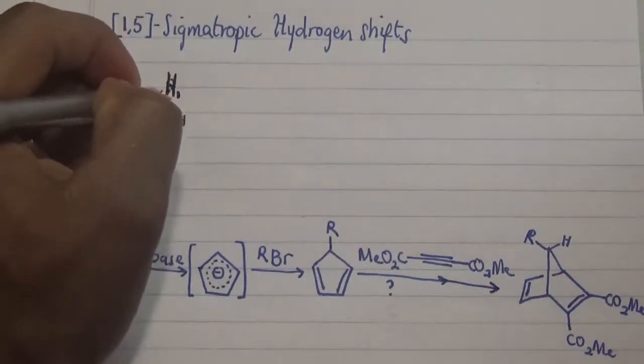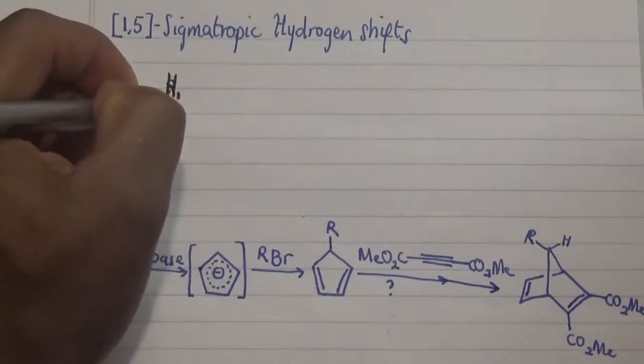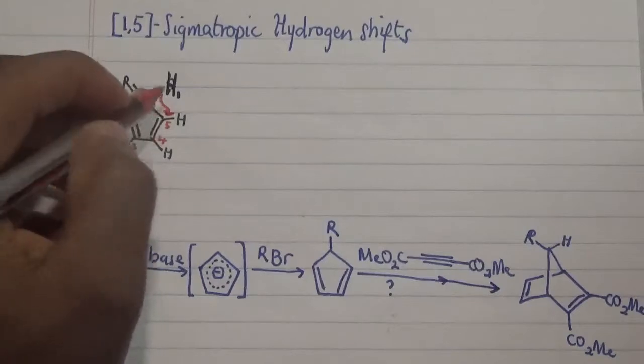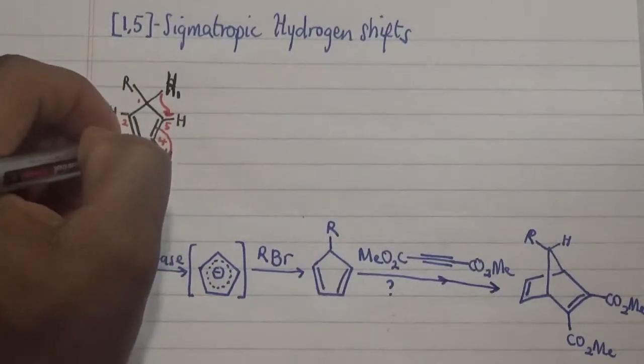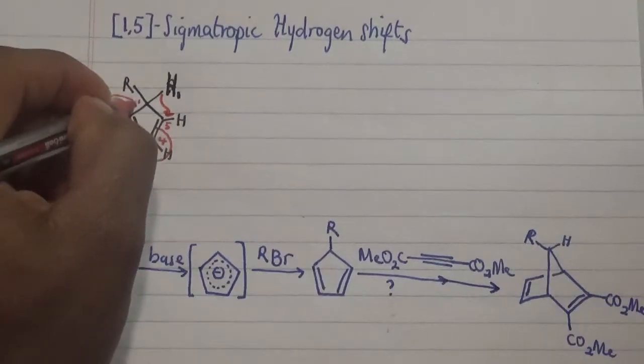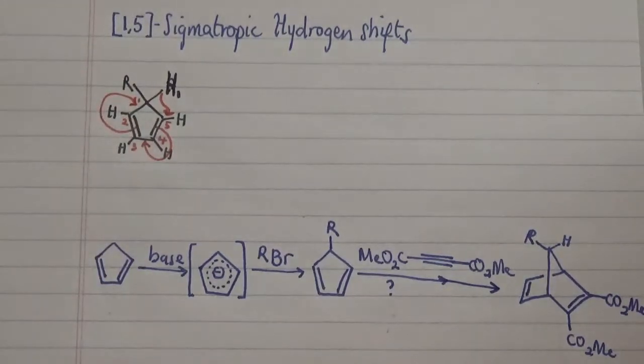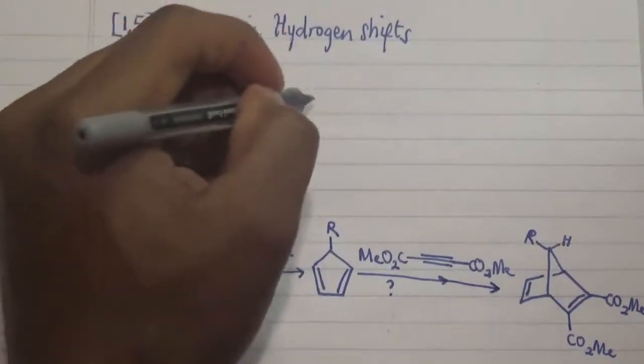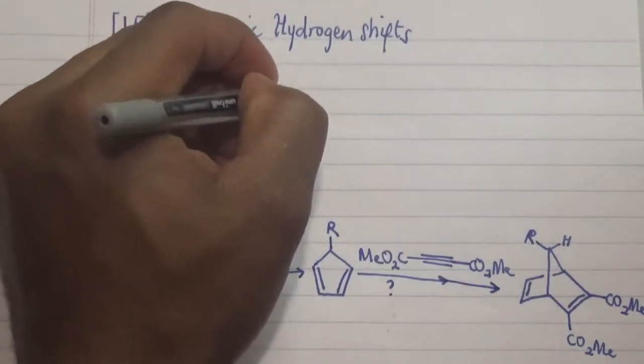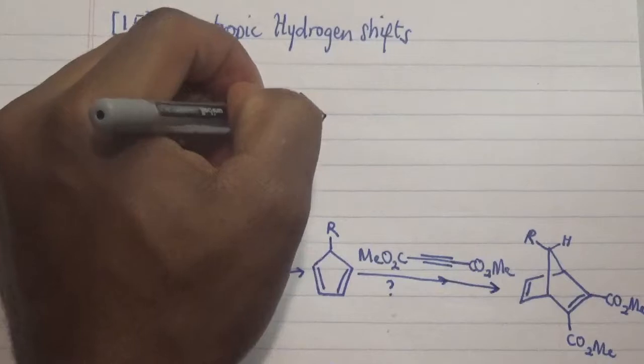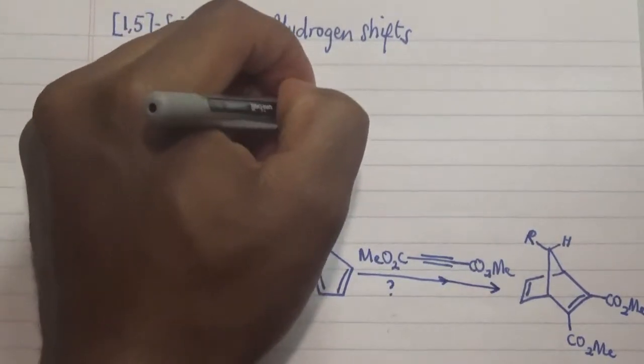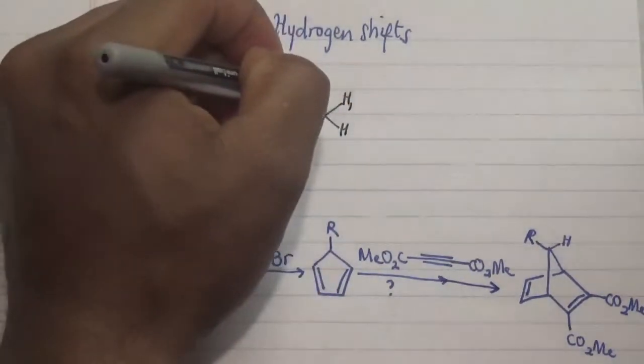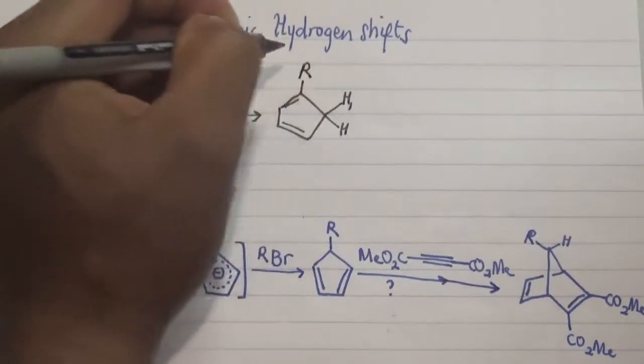So what happens is that if I show you my arrows, I'm going to form a new sigma bond at carbon 5 here, and this double bond forms a double bond here, and this double bond forms a double bond here. So what we have as a result is the 1,5-sigmatropic hydrogen shift from carbon 1 to carbon 5. This is our product structure where this is hydrogen 1, this is the other hydrogen present here, and on this other side we have our R group.